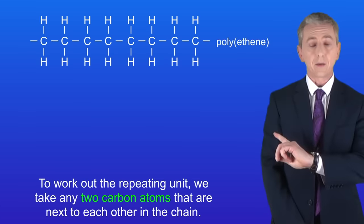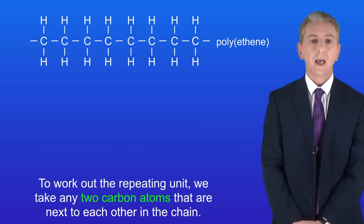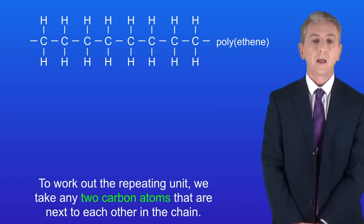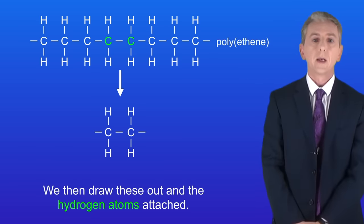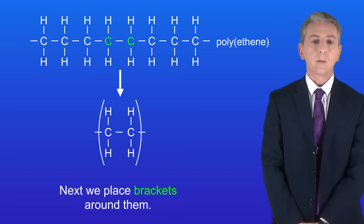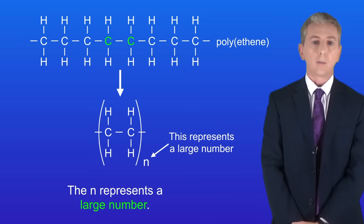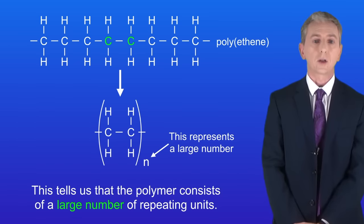I'm showing you here polyethene again. To work out the repeating unit, we simply take any two carbon atoms that are next to each other in the chain. I'm taking these two. We then draw these out and the hydrogen atoms attached like this. Next we place brackets around them, and finally we write a small n to the right. The n represents a large number. This tells us that the polymer consists of a large number of repeating units.